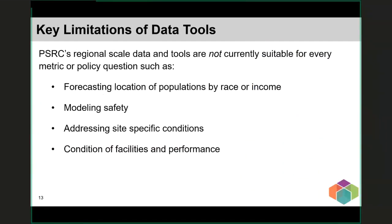Key limitations of our data and tools: this is always one of the most difficult but important conversations related to regional modeling — how we can use the information and what we just can't answer yet. For example, we can't currently forecast race and income. Safety is also an important policy objective that cannot be modeled at a regional scale: crashes occur due to numerous circumstances that are not inputs to regional travel demand models, and the behavioral reasons for many accidents are not part of any long-range forecast. Regional models are good at regional forecasts but are not intended for use at the micro level.